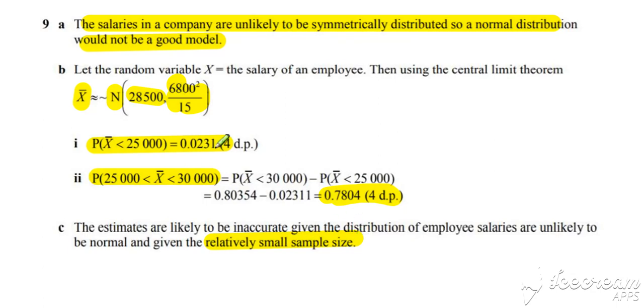So if we wanted these answers to be accurate, then we would need the sample size to be larger. And our ballpark figure is greater than 30, and it's only equal to 15. So we can still use the central limit theorem as an estimate, but it won't be a particularly good estimate unless the sample size is larger.